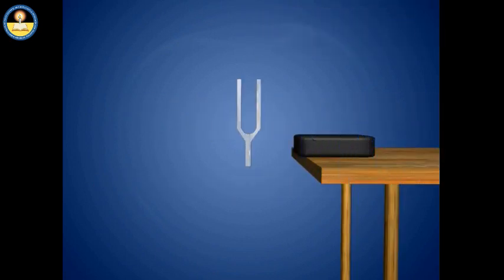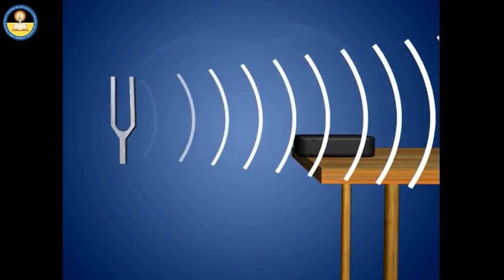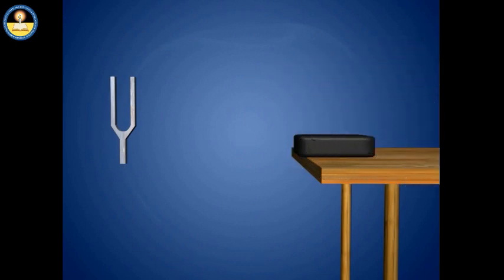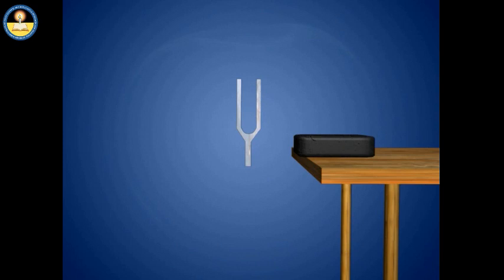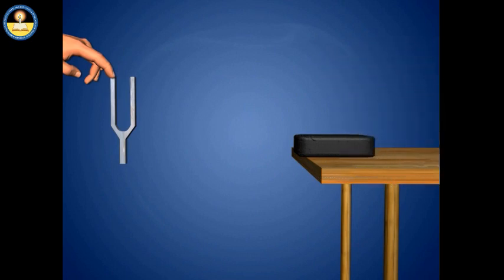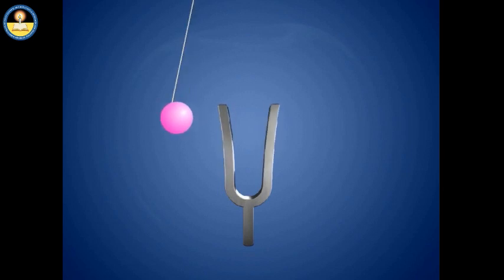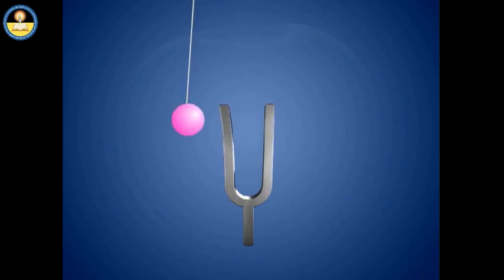Let us see an activity. Take a tuning fork and set it vibrating by striking its prong on a rubber pad. Bringing it near the ear, you can hear a soft sound. Again, set the tuning fork vibrating by striking its prong on the rubber pad, and touch one of the prongs of the vibrating tuning fork with your finger. You can feel a sensation. Now, suspend a small pit ball by a thread from a support. When we touch the ball gently with the prong of a vibrating tuning fork, the pit ball starts moving to and fro because of the vibrations of the tuning fork.